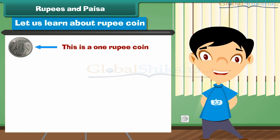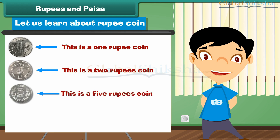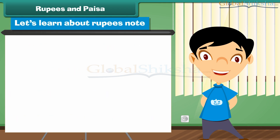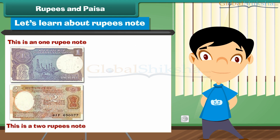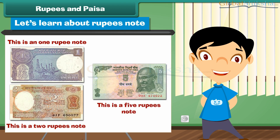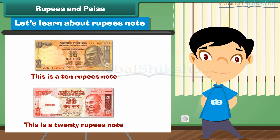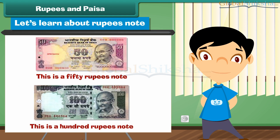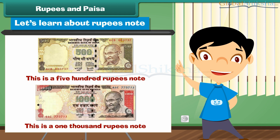Let us learn about rupee coins. This is a 1 rupee coin. This is a 2 rupees coin. This is a 5 rupees coin. This is a 10 rupees coin. Let's learn about rupee notes. This is a 1 rupee note, a 2 rupees note, a 5 rupees note, a 10 rupees note, a 20 rupees note, a 50 rupees note, a 100 rupees note, a 500 rupees note, and a 1000 rupees note.